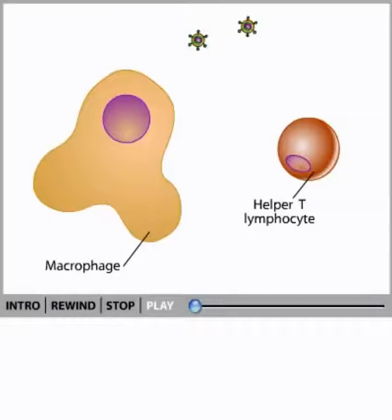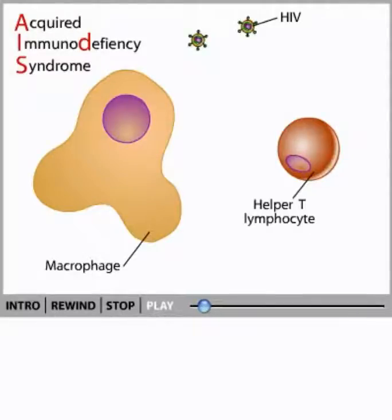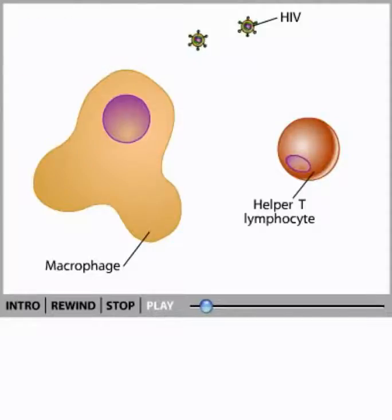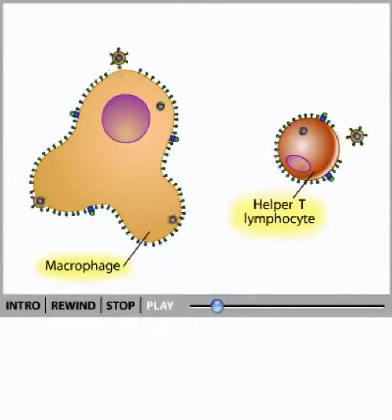The human immunodeficiency virus, or HIV, causes AIDS. AIDS, which is short for acquired immunodeficiency syndrome, is one of the most devastating diseases that humans have yet faced. HIV weakens the immune system, leaving the body open to attack by other invaders. HIV infects two important cell types of the immune system: macrophages and helper T lymphocytes.